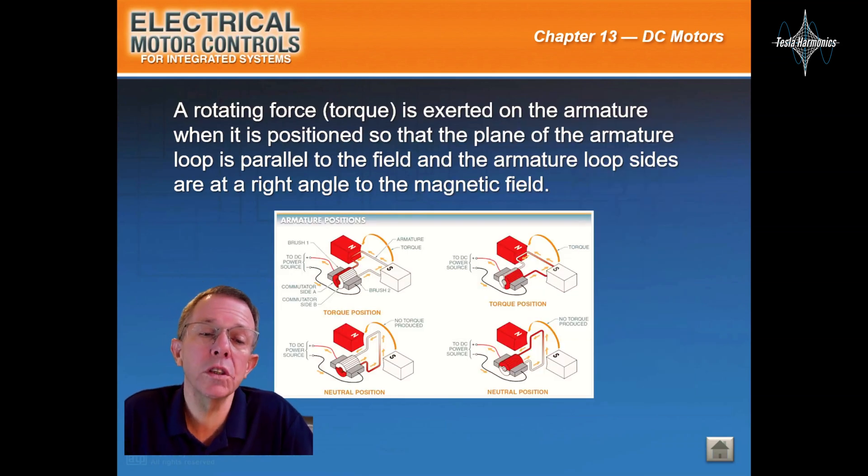A rotating force or torque is exerted on the armature when it is positioned so that the plane of the armature loop is parallel to the field and the armature loop sides are at right angles to the magnetic field.